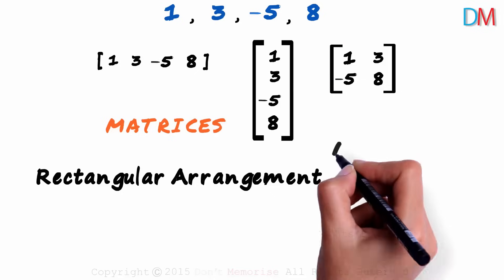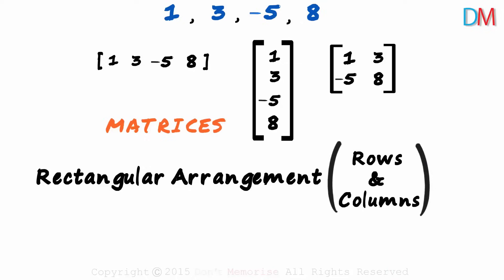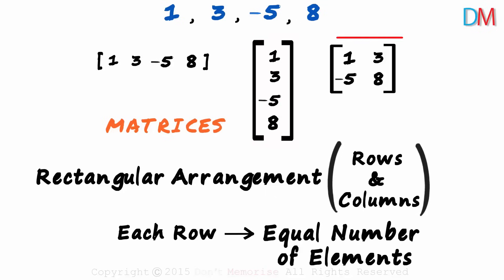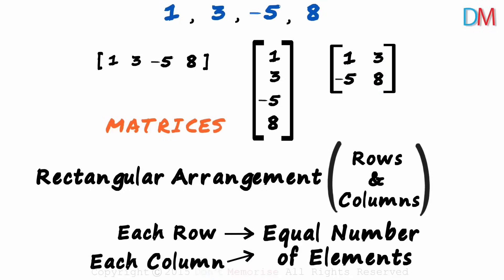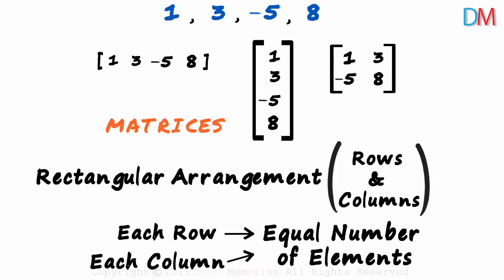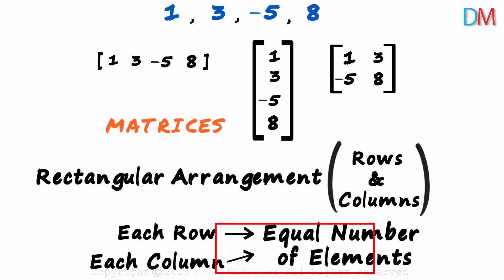So a matrix is just a rectangular arrangement of rows and columns, but there is one important condition we need to keep in mind. Each row needs to have an equal number of elements. For instance, in the second matrix, each row has one element, and in the third matrix, each row has two elements. And each column also needs to have an equal number of elements. In the first matrix, each column has one element. The second matrix has just one column, so it doesn't matter. And in the third one, each column has two elements. So a matrix is a rectangular arrangement of rows and columns in which each row has an equal number of elements and each column as well has an equal number of elements.